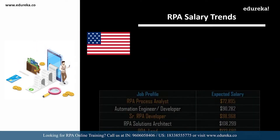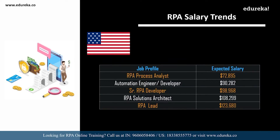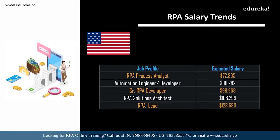If you look at the same roles in the USA: an RPA process analyst can expect around 72,000 dollars, an automation engineer or developer around 90,000 dollars, a senior RPA developer around 98,000 dollars, an RPA solutions architect around 1,00,000 US dollars, and an RPA lead around 1,23,000 dollars. That's a huge amount of money for any career role.